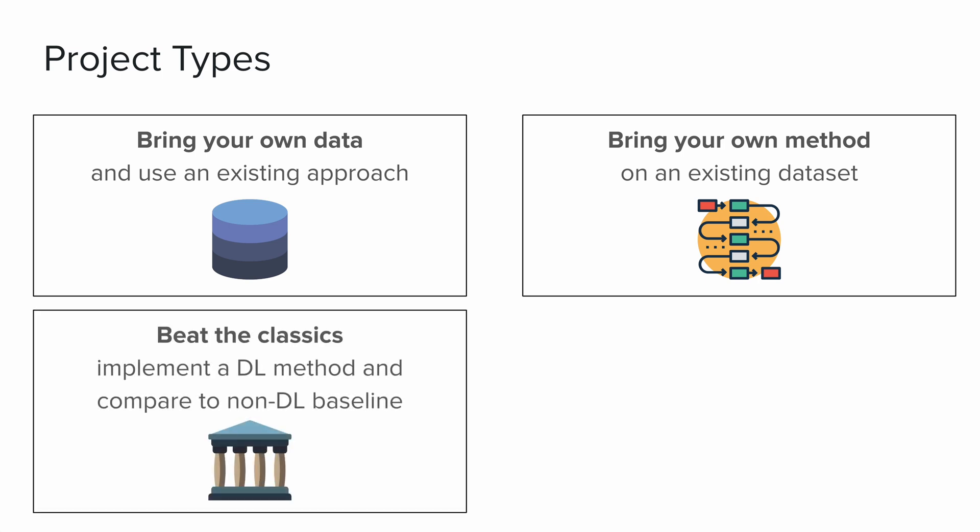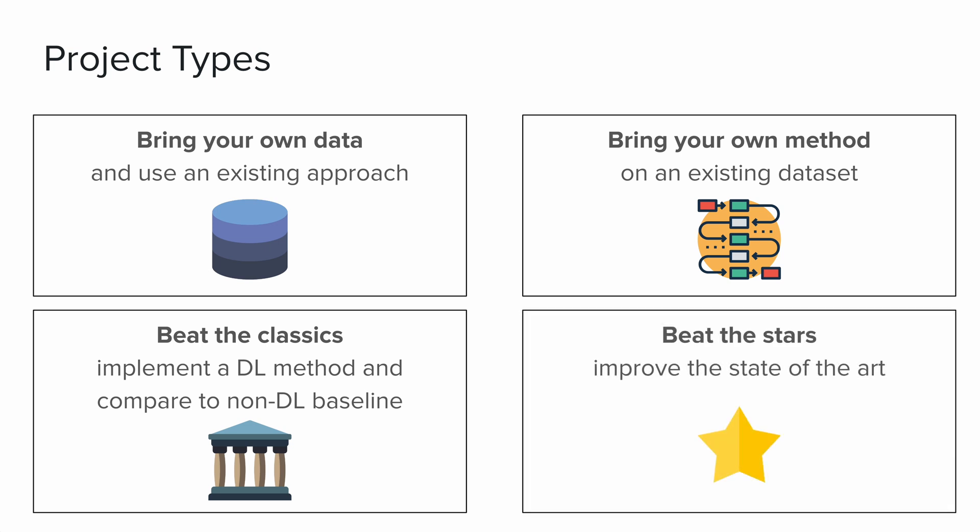You can also try to 'Beat the Classics': implement a deep learning method and compare it to a non-deep-learning baseline. Or, as a fourth project type, you can try to 'Beat the Stars' — the most challenging type. Here, the goal is to actually improve the state of the art. You'll need to figure out which papers have been published recently, what the current best results are for a particular challenge, and try to beat that.